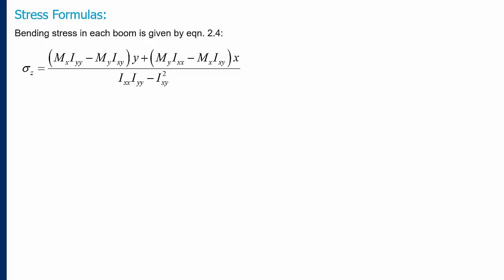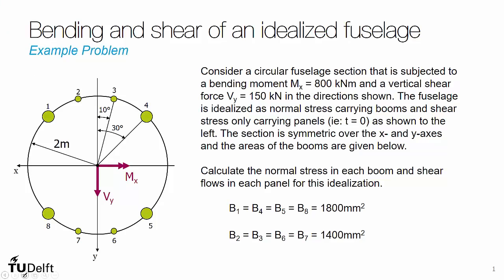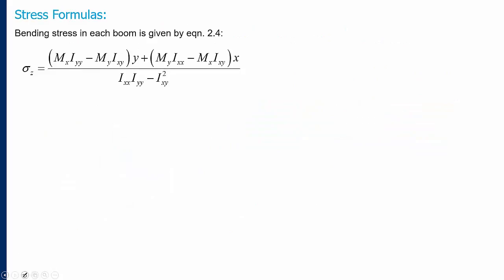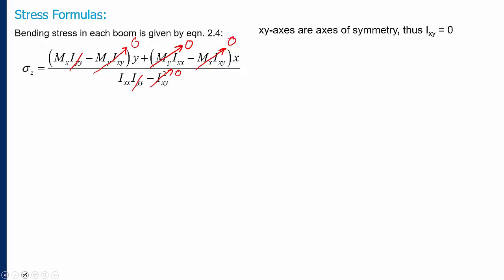First, we know for our problem that we only have a moment acting in the x direction, so our moment in y is in fact zero. We can also see that because the xy axes are axes of symmetry, our product moment of inertia ixy is also equal to zero. Those terms go to zero, our iyy cancels with what's remaining, and we get that our normal stress simplifies to just mx times y over ixx.